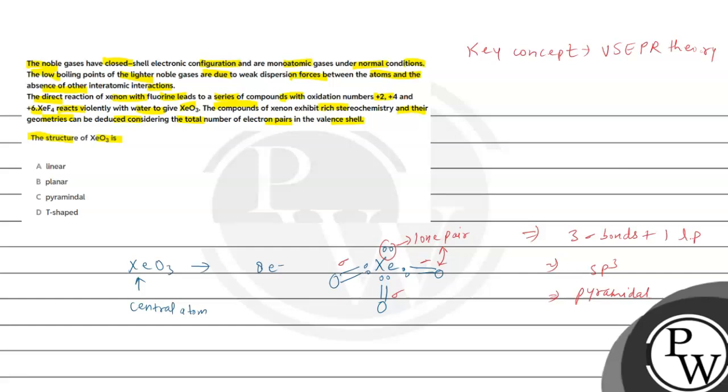So if we see the structure again, it will be like this: here is the lone pair, and we get a pyramidal type structure. So the answer is option C, which is the right answer to this question. I hope you understood it well. Best of luck.